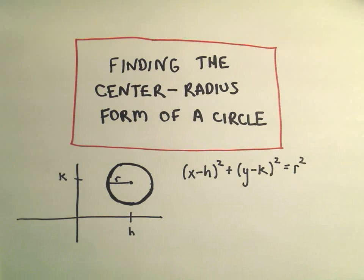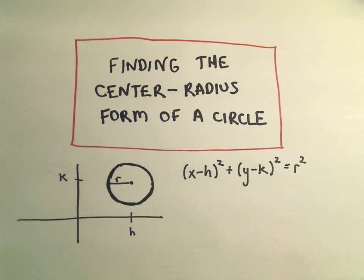Alright, in this video I want to talk about doing a couple examples of finding the center-radius form of a circle. The idea is if you have a circle that's centered at the point positive h, positive k.